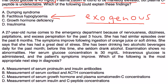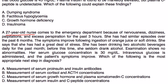Clinical vignette three: A 27-year-old nurse comes to the emergency department with nervousness, dizziness, palpitations, and excessive perspiration for three hours. She has had similar episodes over the past six months. Symptoms improve with ingestion of orange juice or soft drinks. She reports significant stress and has been drinking two alcoholic beverages daily for the past month. Examination shows no abnormalities. Serum glucose is 30. IV glucose is administered and symptoms improve. What is the most appropriate next step in diagnosis?